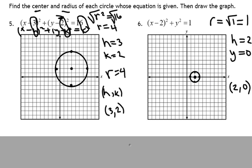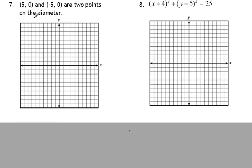If you didn't get this and you don't understand why, please raise your hand. Number 7, you're going to have to work backwards on this one again. It says 5, 0, and negative 5, 0 are two points on the diameter. So that means at 5, 0 and negative 5, 0 — this is the diameter of the circle.